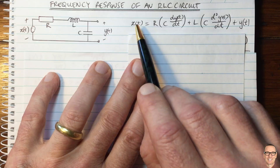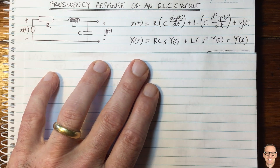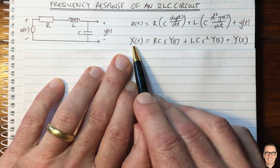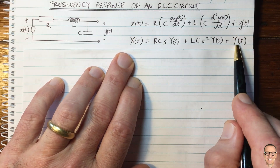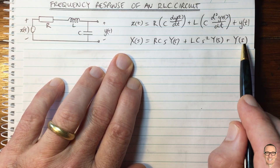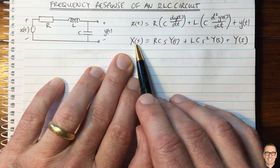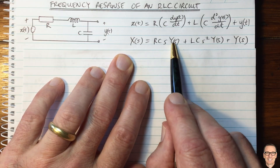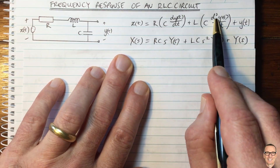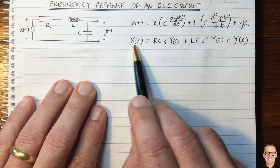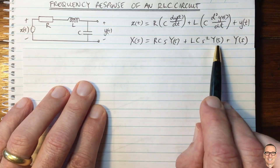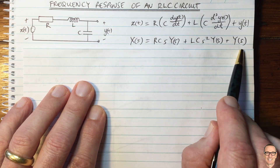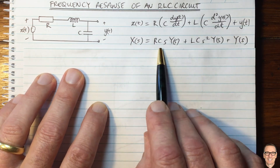We take the Laplace transform of each term. The Laplace transform of input X is simply X, and the Laplace transform of output Y is capital Y as a function of the Laplace variable S. The Laplace transform of derivatives gives S times the Laplace transform of the function, and a second derivative gives S squared. Collecting all the Y(S) terms together and dividing through by X(S) gives Y(S)/X(S), the system response.